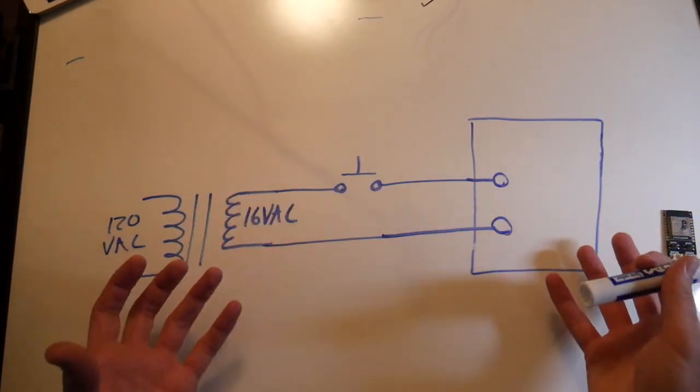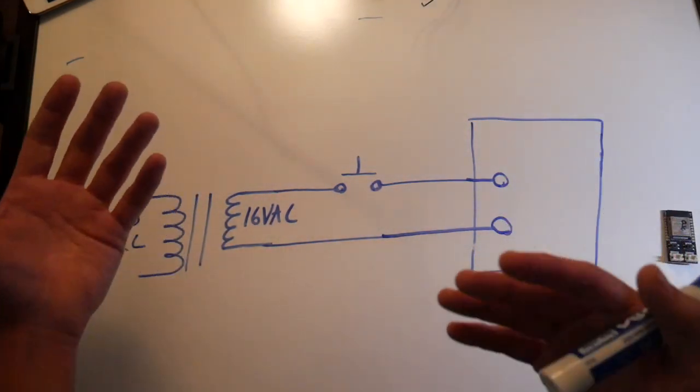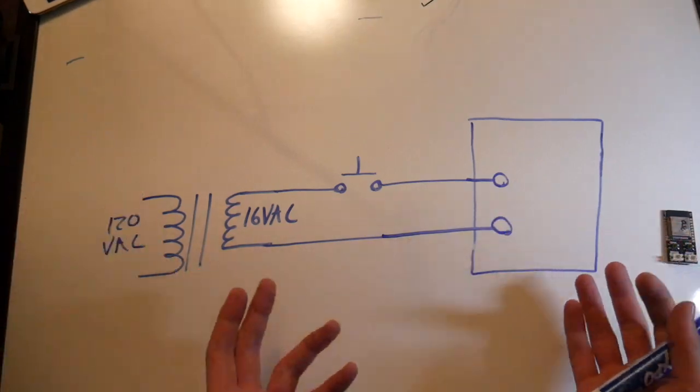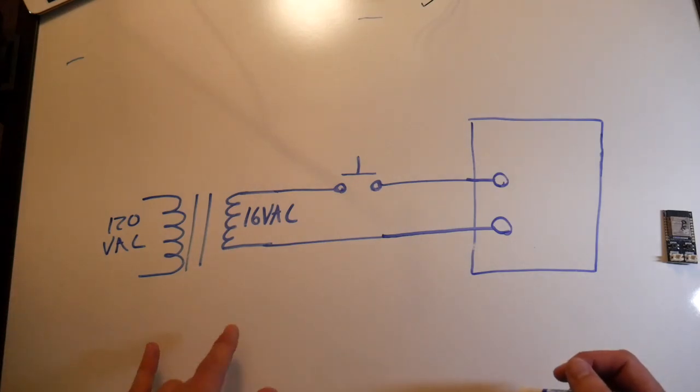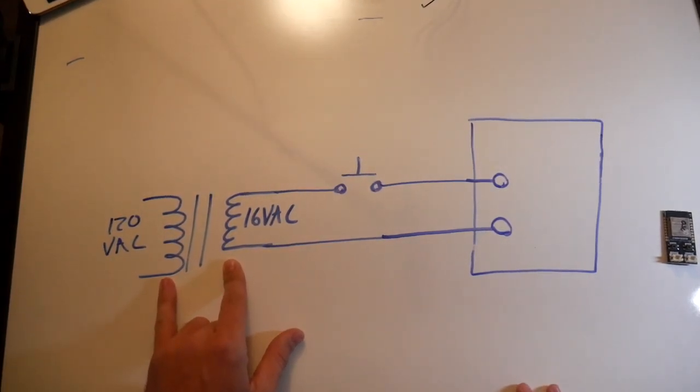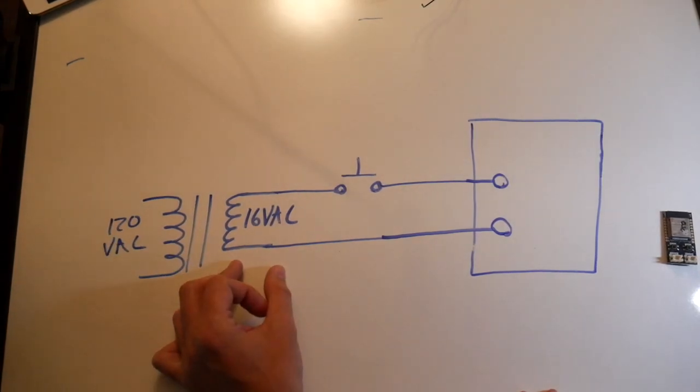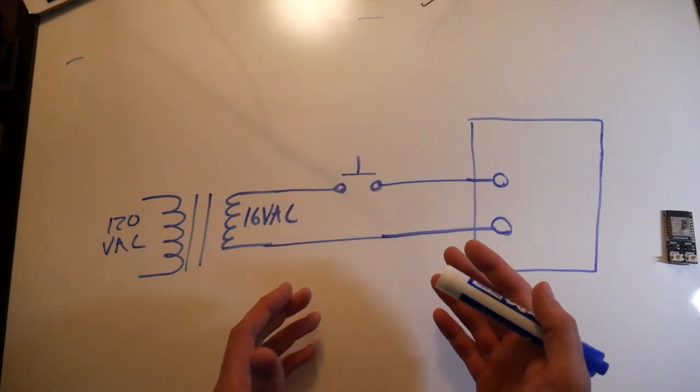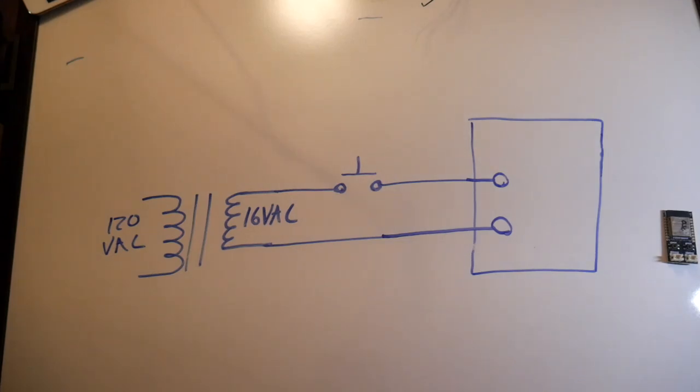First it's important to understand how the doorbell works. Here in my house, which by the way could be different for you, so it's important to actually go and take some measurements and fully understand how the doorbell works so you don't blow anything up. In my basement here I've got a step down transformer that brings the AC mains 120 down to 16 volts. I actually did measure this, and it's important to disconnect the breaker that powers this transformer before you go and wire anything in.